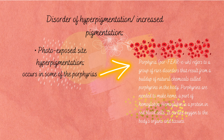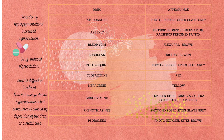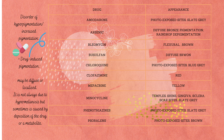Porphyrins are needed to make heme, part of hemoglobin. Hemoglobin is a protein in red blood cells which carries oxygen to the body's organs and tissues. Drug-induced pigmentation may be diffuse or localized; it is not always due to hypermelanosis but is sometimes caused by deposition of the drug or its metabolite.